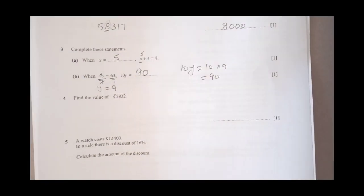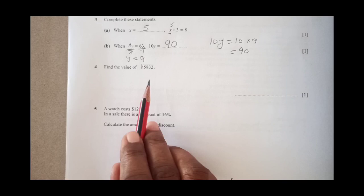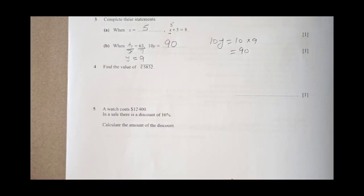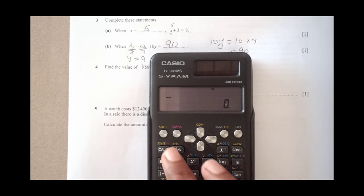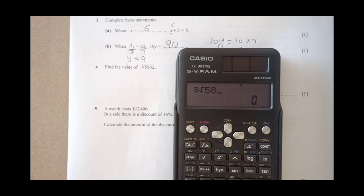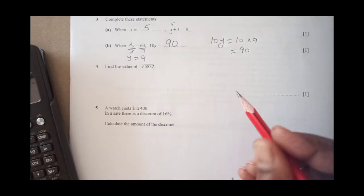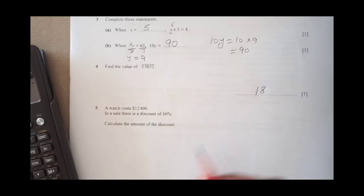Next is find the value of cube root of 5832. We can directly do this from the calculator. Cube root of 5832, which is 18. You can directly write down 18 here.